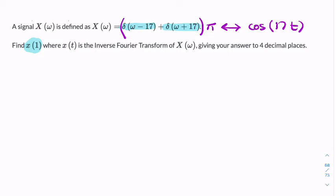So if you were to see that without the pi, then the answer would be 1 over pi cosine 17t.